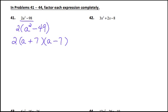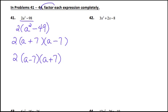The 2 does have to come down in front. You could have the (a − 7) in front and the (a + 7) in the back. If you foiled that back out and then multiplied by this 2, you would get the original problem. So we're writing these things as products when we factor them.